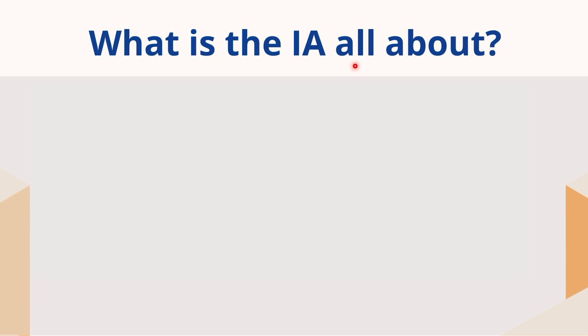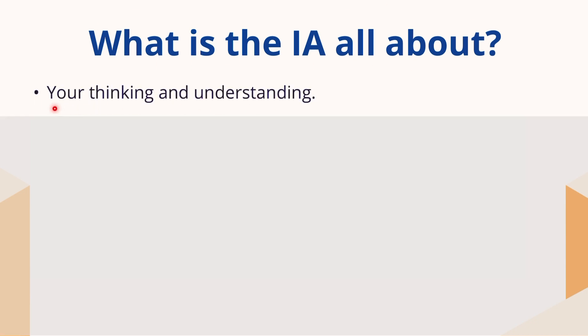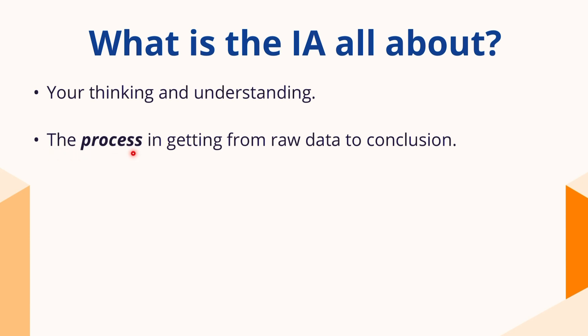So with all that said, what is the IA all about? Like I said before, it's about your thinking and understanding. The whole reason you're going through this is to show your thinking and your understanding, and give you an opportunity to do that outside of a test — a paper one, a paper two, a paper three, whatever papers you're doing. And it's about the process in getting from raw data to conclusion. How do you get from here to there using all the logical information we've talked about in the course: the data gathering, the sampling, the regression lines, the plotting of the data, the equations, the modeling, the graphing, the integration, the derivatives — all of that stuff. That's what this is all about.